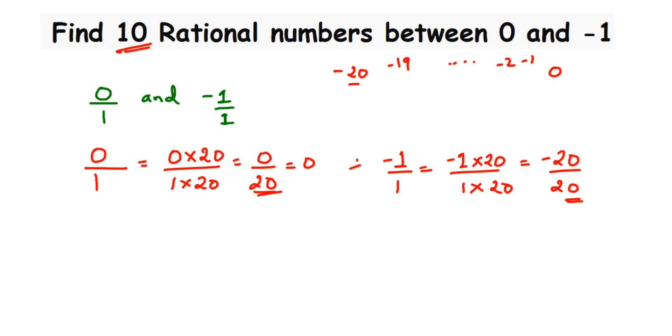We have to choose any 10 rational numbers between these two. Don't include 0 and -20. Remember that 0 and -20/20 are equivalent rational numbers, so instead of taking 0 and -1, we're taking 0 and -20/20.